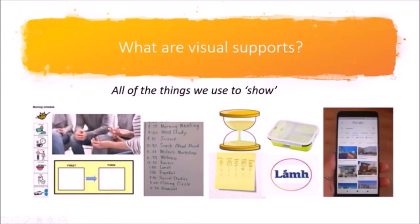Visuals or visual supports are anything that we use to show. Sometimes when we hear the word visuals, we think of small laminated pictures. However, visuals include many more expressions — for example, photographs, objects, signs, gestures, drawings, written words if your young person can read, videos, calendars, social stories, comic strip conversations, and many more.